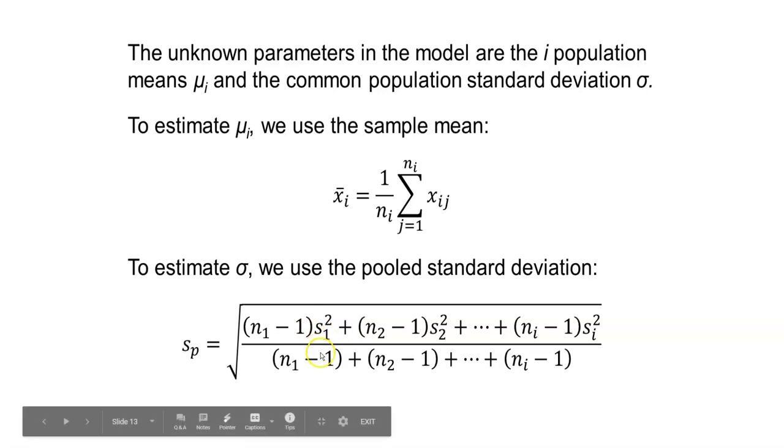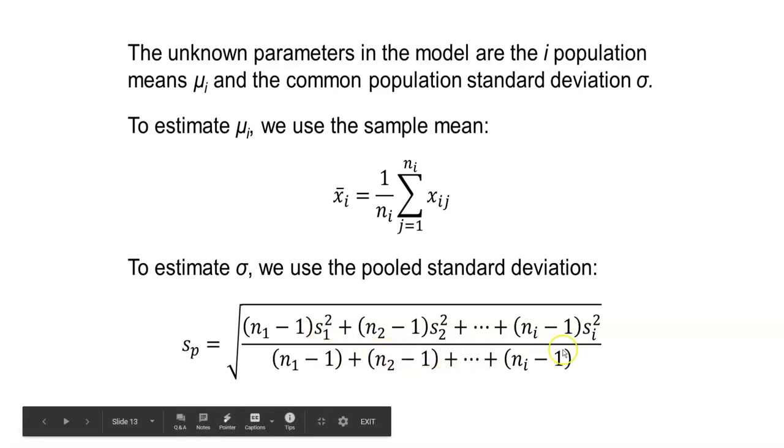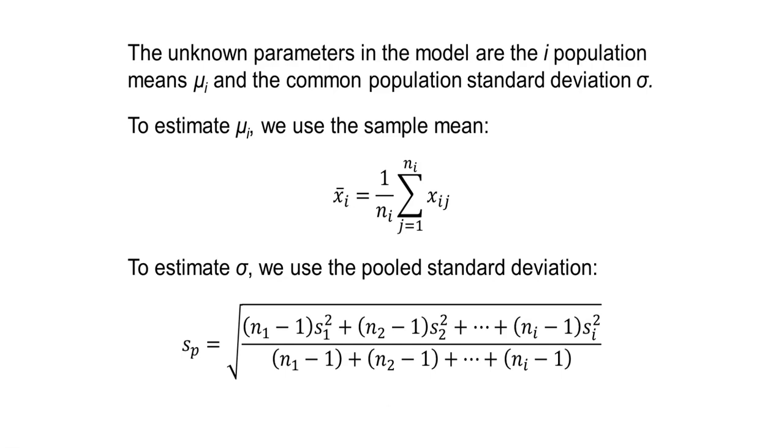And then we divide by the sample sizes minus 1, and then we do that for every different treatment. We can denote that pooled standard deviation, S sub p.